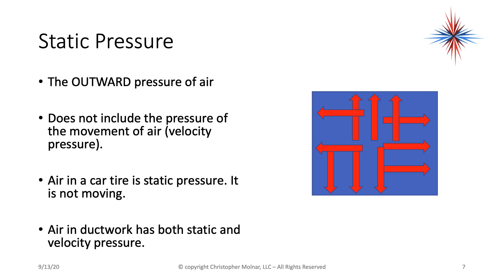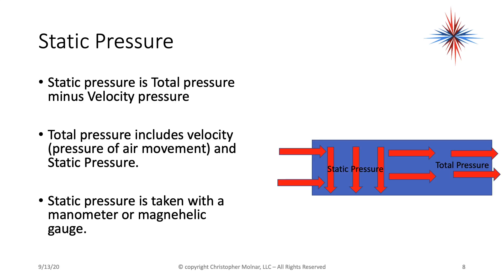You're going to hear me refer to static pressure, so let's quickly define it. Static pressure is the outward pressure of air — air pressing out on any object at right angles to the surface. It does not include the pressure of the movement of the air, which is velocity pressure. Air in a car tire is static pressure — it's not moving and has no velocity. Air in ductwork, because it's moving, has both static and velocity pressure.